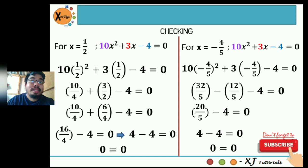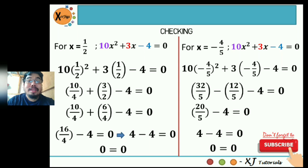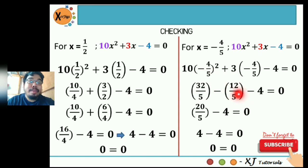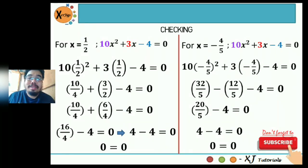For x equals negative four-fifths, substituting into the original equation: 10 times (negative 4/5) squared plus 3 times (negative 4/5) minus 4 equals 0. Negative four-fifths squared is 16 over 25, times 10 gives 160 over 25, which in lowest terms is 32 over 5. Then 3 times negative four-fifths is negative 12 over 5. So 32 over 5 minus 12 over 5 equals 20 over 5, which is 4. Then 4 minus 4 equals 0, so 0 equals 0. This is a solution.